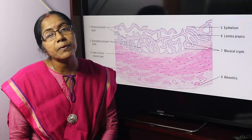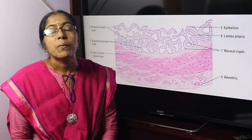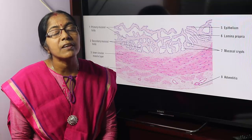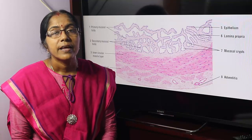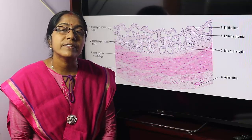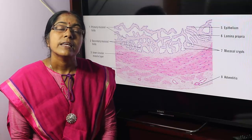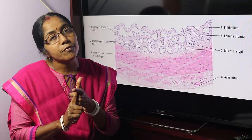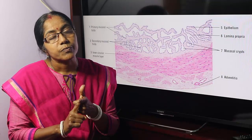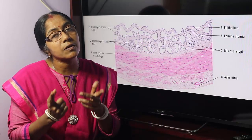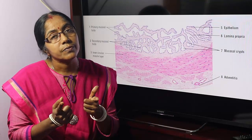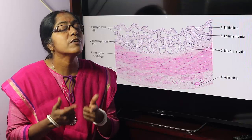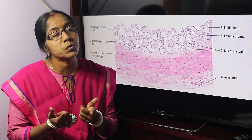The secretion of the seminal vesicle includes fructose. What is the function of fructose? It provides nutrition to the spermatozoa.